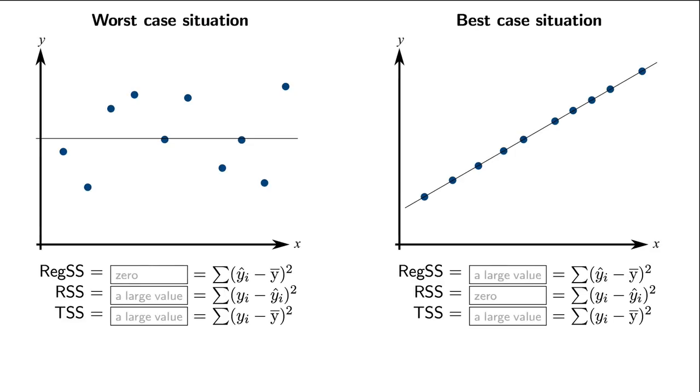Did you get these results? For the uncorrelated case on the left, we see that the predicted value, y-hat, is just equal to the average y-bar value.